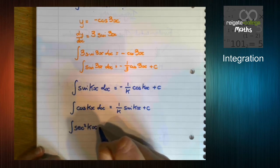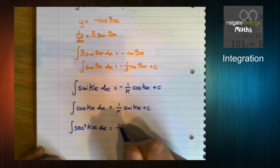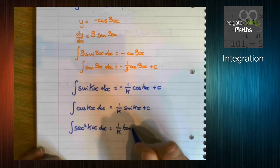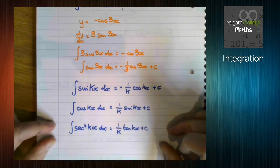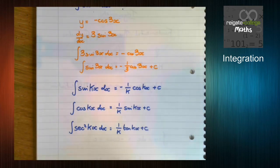The last one, sec squared kx, integrates to 1 over k tan kx plus c. That's what's in the formula book, this one.